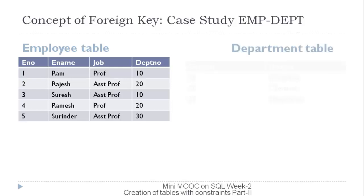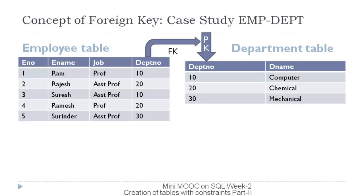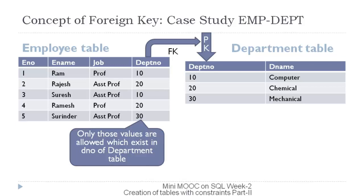To implement it, we create a master table named department with columns department number and department name, and insert all valid department numbers into this table. The department number of the department table is made the primary key. To enforce integrity of data, the department number of the employee table will be made a foreign key — it will refer to department number of the department table for its validity.